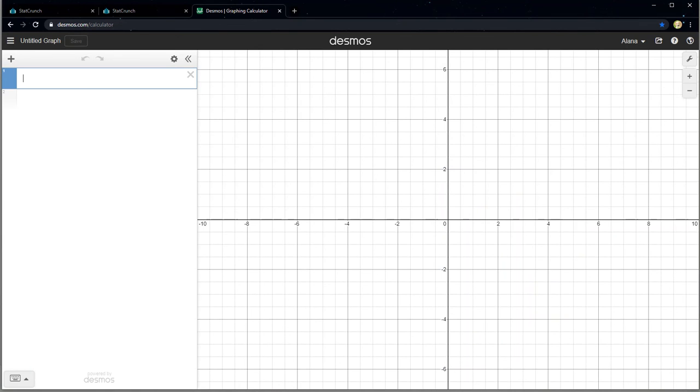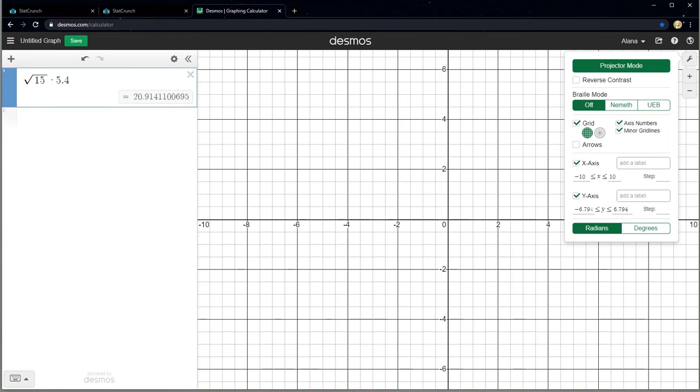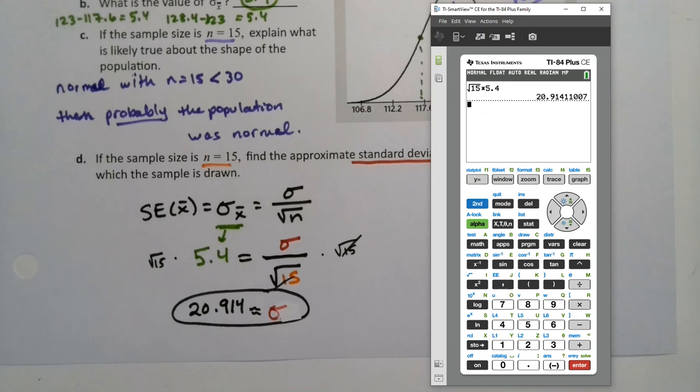And just to show you this in Desmos, when I do Desmos, I can grab square root down here in the palette. It looks like a little check mark, but I actually just type SQRT and it knows what I want. So square root of 15. And then just like the calculator, you have to get out of there. You want to use your right arrow to get out of there and then say times 5.4. And there you have it. So it should look in Desmos just like it looks on the page. Also on the calculator, just like it looks on the page.